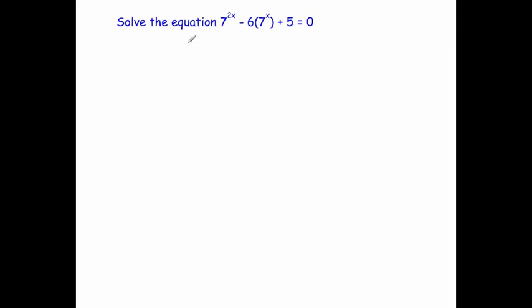In this question we've been asked to solve the equation 7 to the power of 2x, subtract 6 multiplied by 7 to the power of x, plus 5 equals 0. Notice this looks a little bit like a quadratic — we've got our 7 to the power of x, we've got 7 to the power of 2x, and we've got our constant on the end, and then it equals 0.